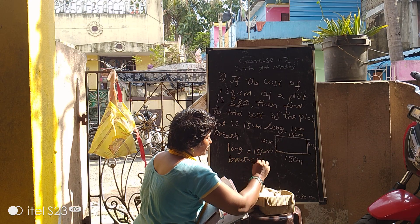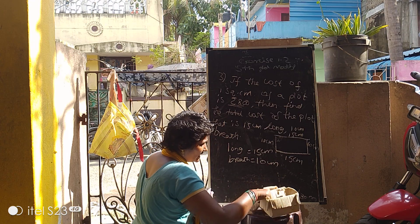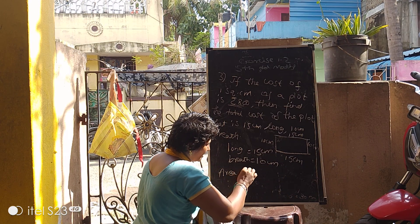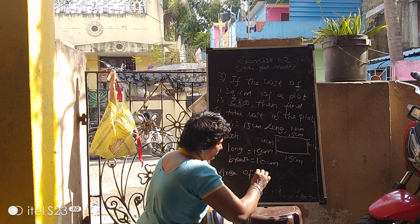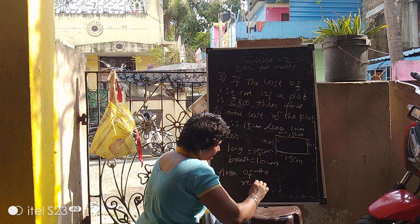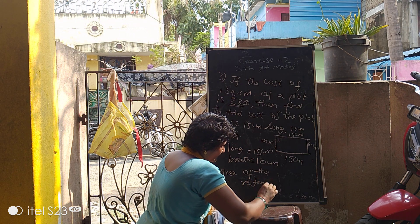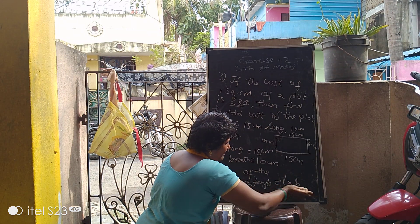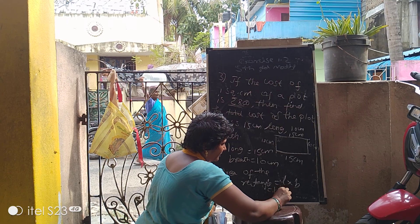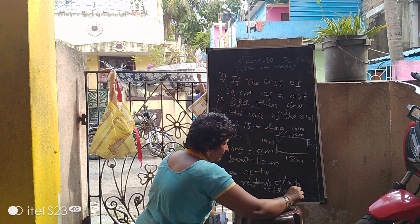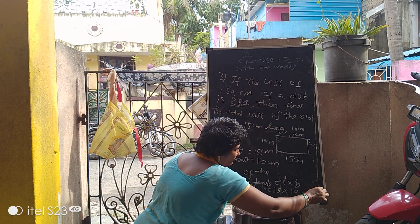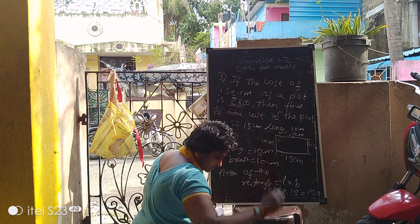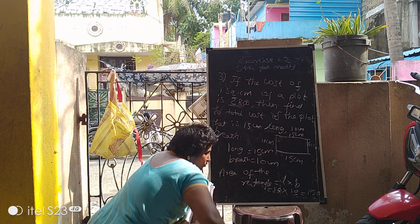Breadth is equal to 10 centimeters. Area of the rectangle is equal to length into breadth. What is l? L is 15, into 10, which gives us 150 square centimeters.